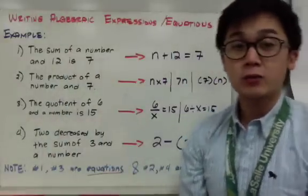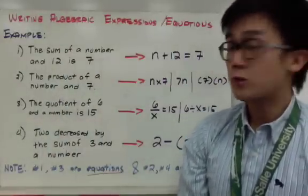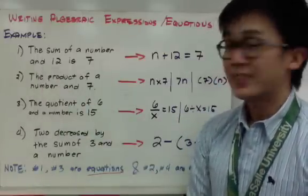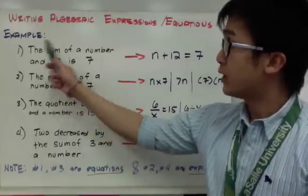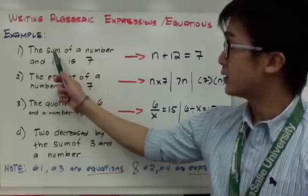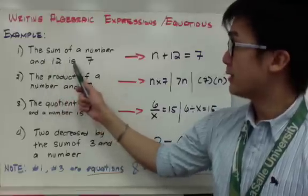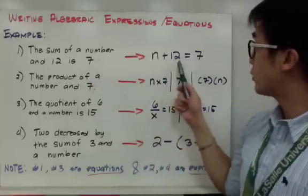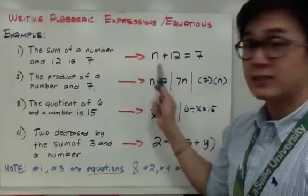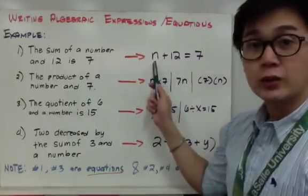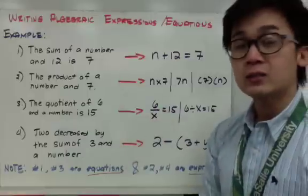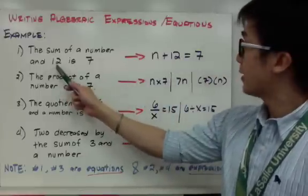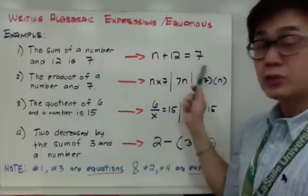Here are some examples of how to write algebraic expressions or equations in numerical form. For example one: the sum of a number and 12 is 7. The keyword here is sum, which means addition. So a number and 12 are being added together and equal to 7. Translated into a numerical equation, it becomes n plus 12 equal to 7. The letter n can be changed — you can use x, y, a, or any letter of the alphabet to represent the unknown number.